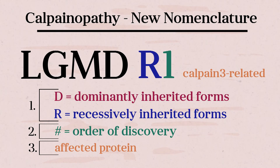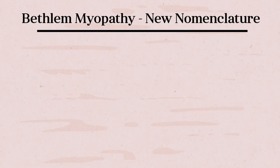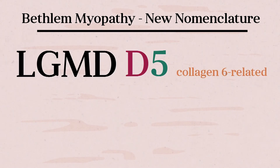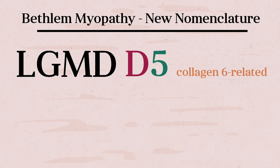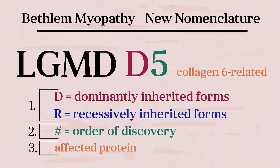There are some disorders that previously had no LGMD designation, such as the dominant form of Bethlehem Myopathy. This is now designated as LGMD-D5, collagen-6 related. So once again, the nomenclature includes LGMD followed by a letter R for Recessive or D for Dominant, a number reflecting the order in which the gene was discovered, and the name of the affected protein.